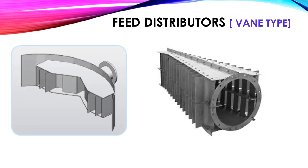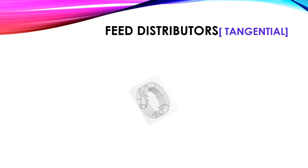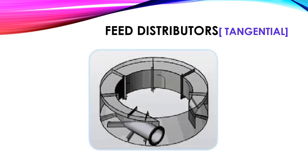These are different types of feed distributors. The first type is a vane type. This is another type of feed distributor — it is a tangential type. Normally these types are used in vacuum distillation columns.